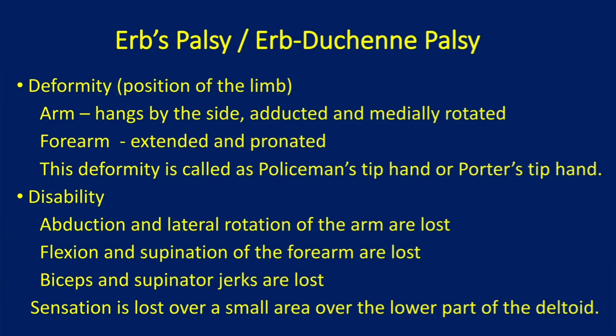The following movements are lost in Erb's palsy: abduction and lateral rotation of the arm, and flexion and supination of the forearm. The biceps and supinator jerks are lost. Sensation is lost over a small area over the lower part of the deltoid.